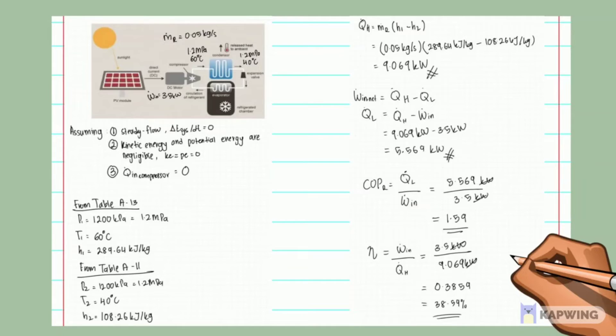This DC current generates the energy needed for the compressor. We assume the mass flow rate, the work input, and the temperature and pressure entering and leaving the compressor.